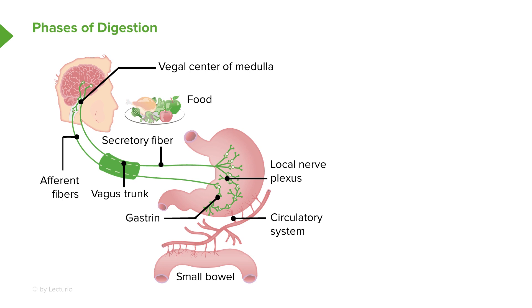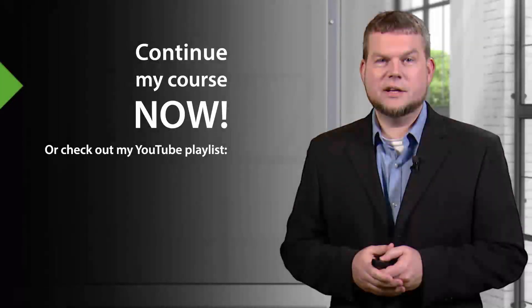So again, we have our three different phases: our cephalic phase, our gastric phase, and our intestinal phase. They all involve various aspects of either the neural system, the hormonal system, or local reflexes.